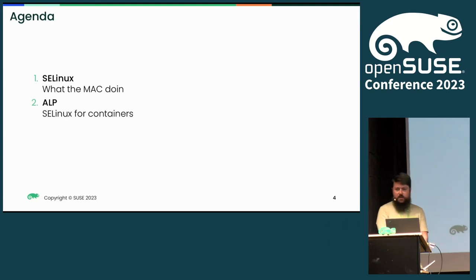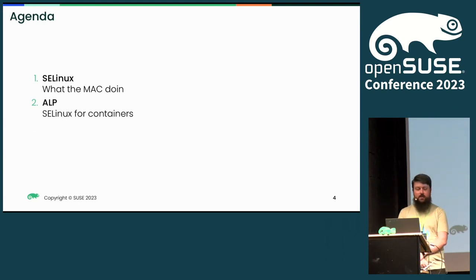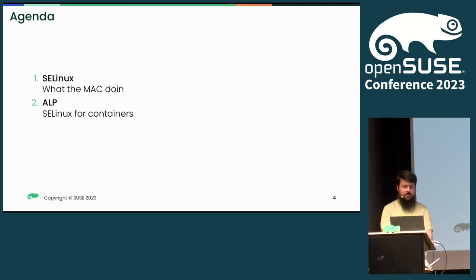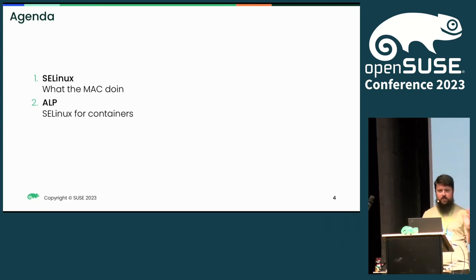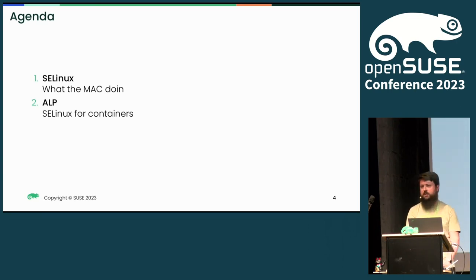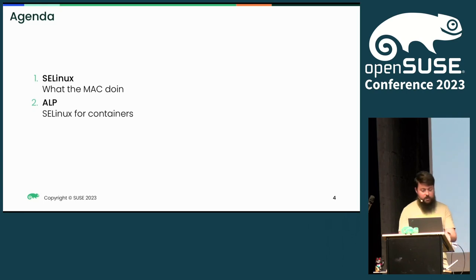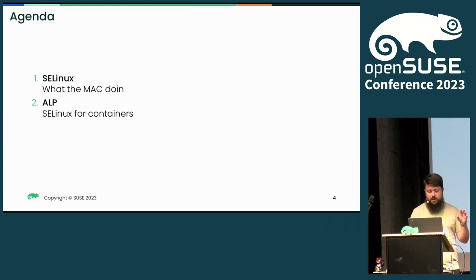After a brief introduction, what are we actually going to talk about today? Since historically SELinux hasn't featured a lot in OpenSUSE distributions and SUSE products, I'm going to give a general high-level introduction — more on the theoretical side — on what SELinux is, how to reason about it, how to interpret it, and how to work with it at a system level. Then we'll look at how this applies specifically in a system like ALP or MicroS, where you have container runtimes and containers running.